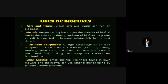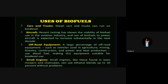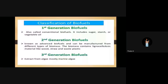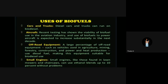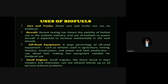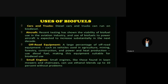List some uses of biofuels: Cars and trucks. Diesel cars and trucks can run on biodiesel. Then aircraft — recent testing has shown the viability of biofuel use in the aviation industry, and use of biofuels to power aircraft is expected to increase substantially in the next decade. Then off-road equipment — a large percentage of off-road equipment such as vehicles used in agriculture, mining, forestry, construction, and power and heat production use diesel fuel, making this equipment suitable for biodiesel use.